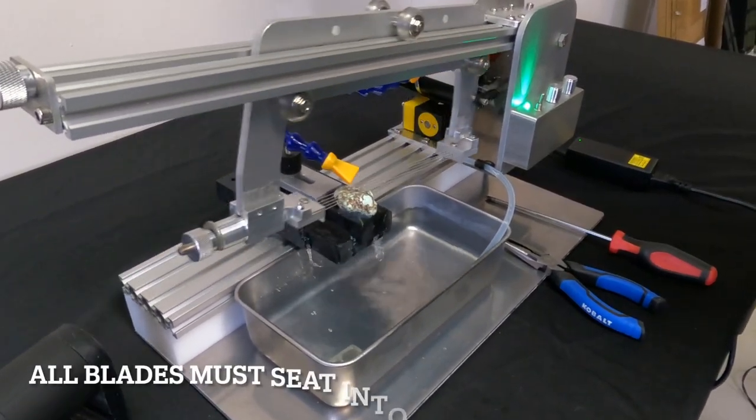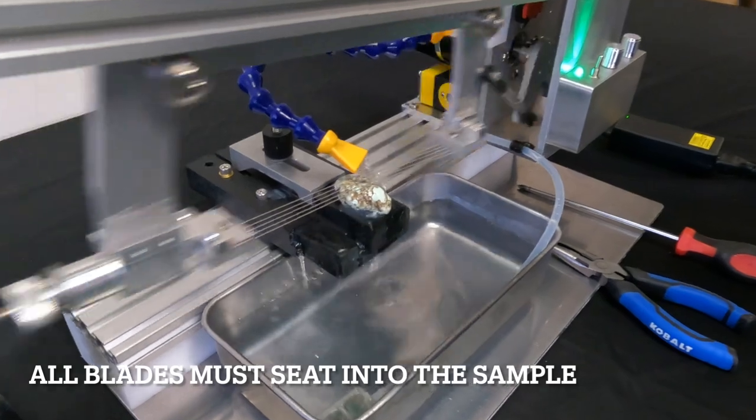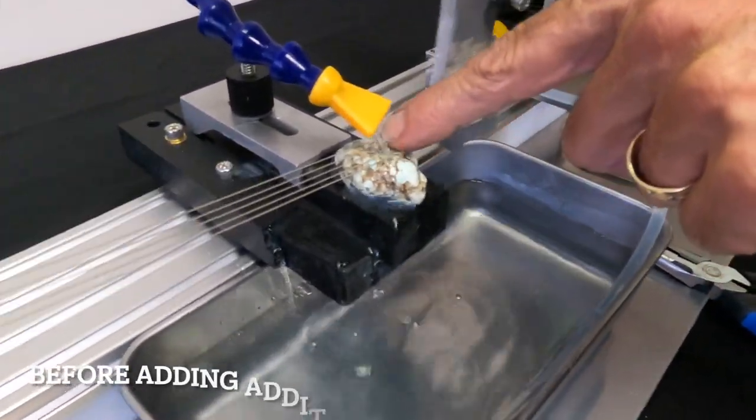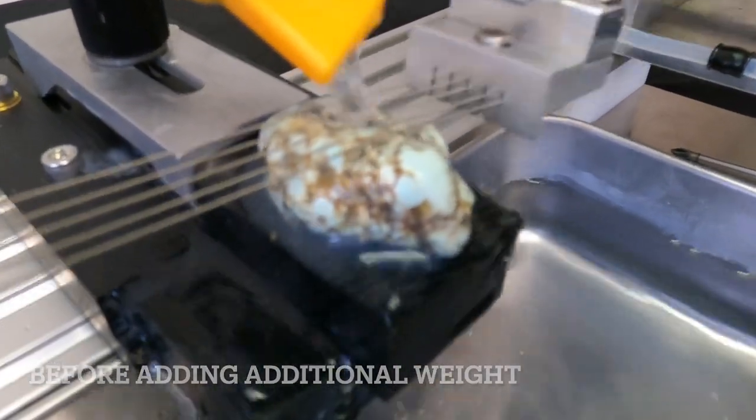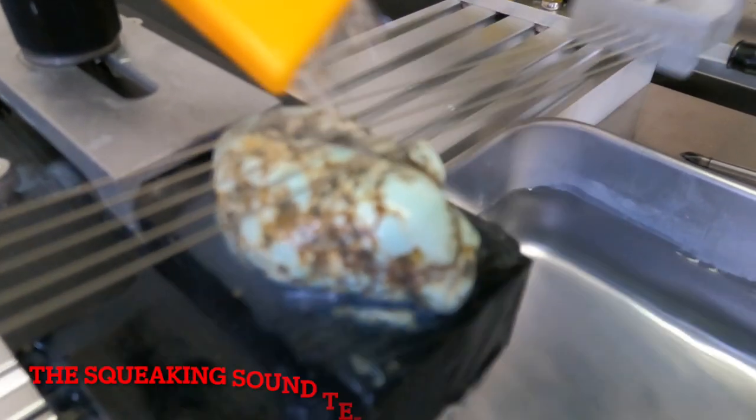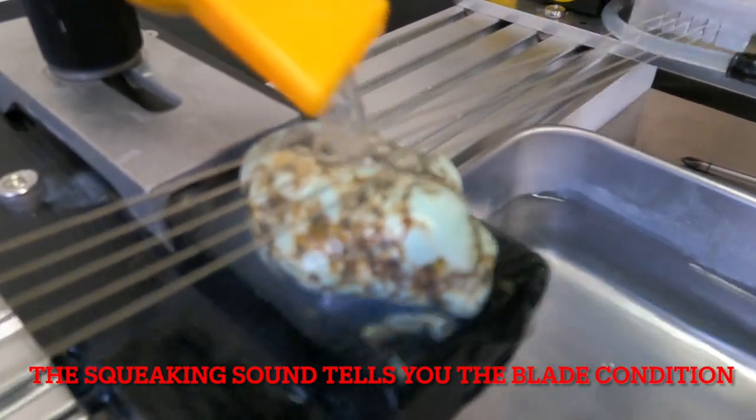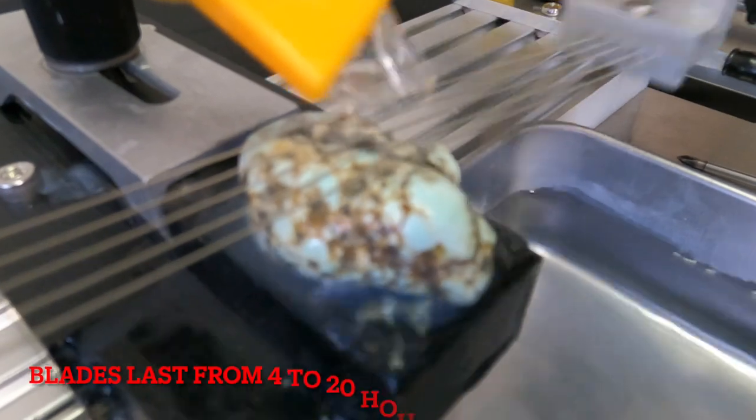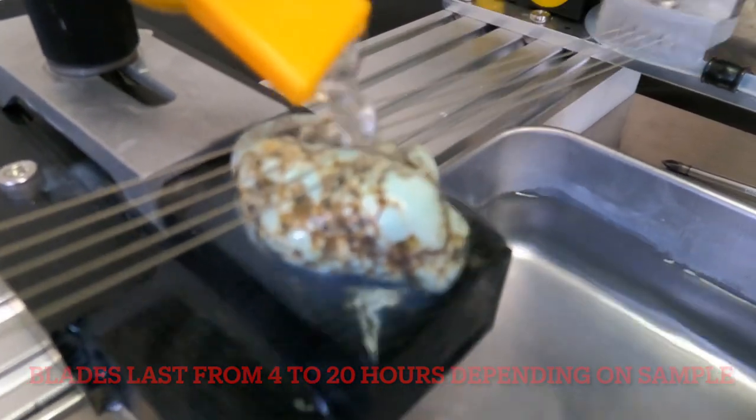You need to leave it running like this for about a minute to let the blades seep into the rock. You can hear the squeaking and that is the blades cutting back and forth through the rock. That's your indication of blade light is how loud it squeaks.